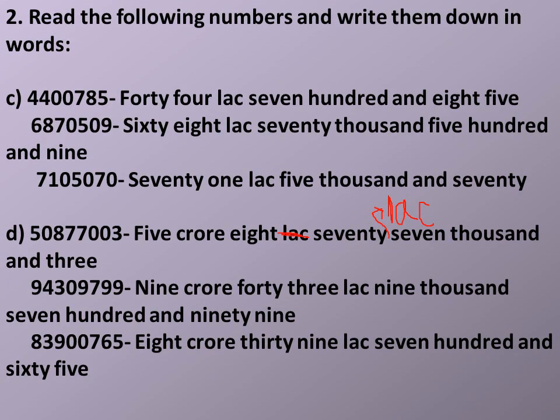Number 2, read the following numbers and write them down in words. Number c: 4,400,785 and 44,785. Next: 6,870,509 — six million eight hundred seventy thousand five hundred and nine.